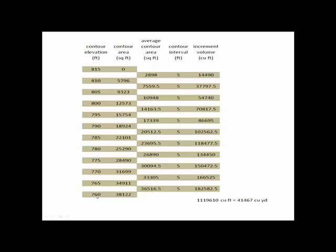Computationally, here's how it goes. You can see my contour elevations at the left. And at every contour elevation I have a contour area given in square feet. Just like I did in average end area, I'm going to take the average of every adjacent pair of contour areas. So, at 760 to 765, the average of those two is 36,516.5 square feet. And the vertical distance between those two end areas is 5. So, my average end area times my contour interval gives me the increment volume between contour 760 and 765.